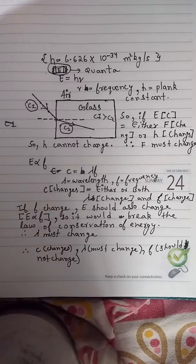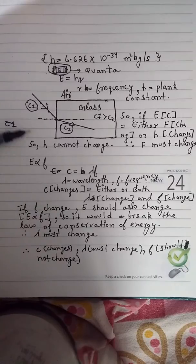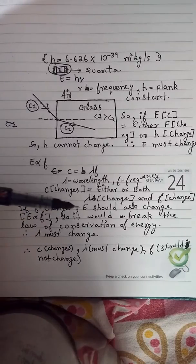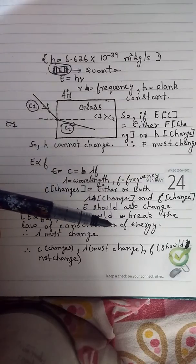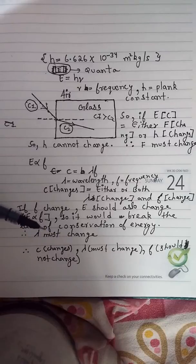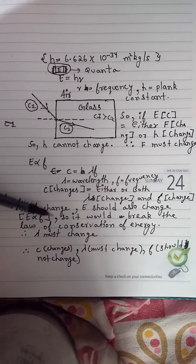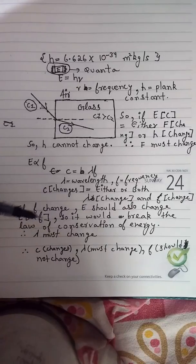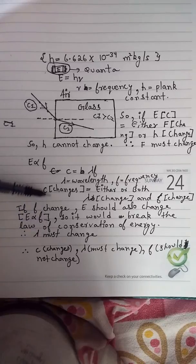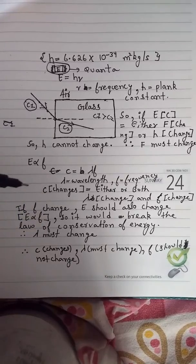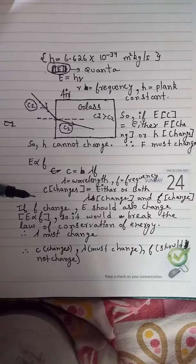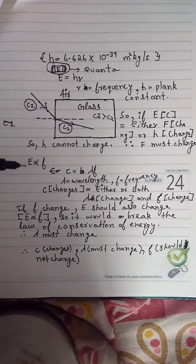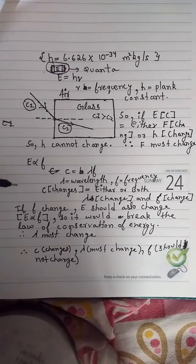So if C is changing, that is, speed of light is changing, then either lambda or the frequency should change. And as we know, if frequency changes, energy should also change, as they are directly proportional. So if the frequency changes, energy would also change, which would break the laws of conservation of energy. So frequency cannot change.